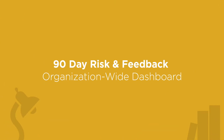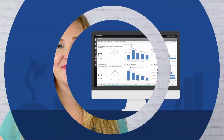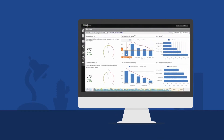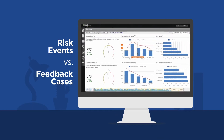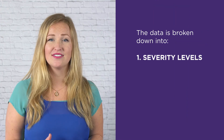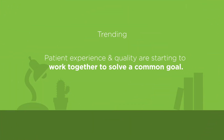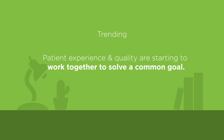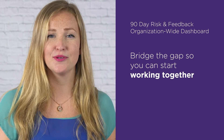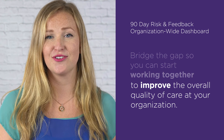My third favorite is the 90-day Risk and Feedback Organizationwide Dashboard. We now have a way to combine risk and feedback data into a single view. The data will show a side-by-side comparison of your risk events versus your feedback cases. The data is then broken down into severity levels, general event types, and your feedback classifications. We are seeing a trend now where patient experience and quality are starting to work together to solve a common goal. This dashboard is a great starting point to bridge the gap so you can start working together to improve the overall quality of care at your organization.